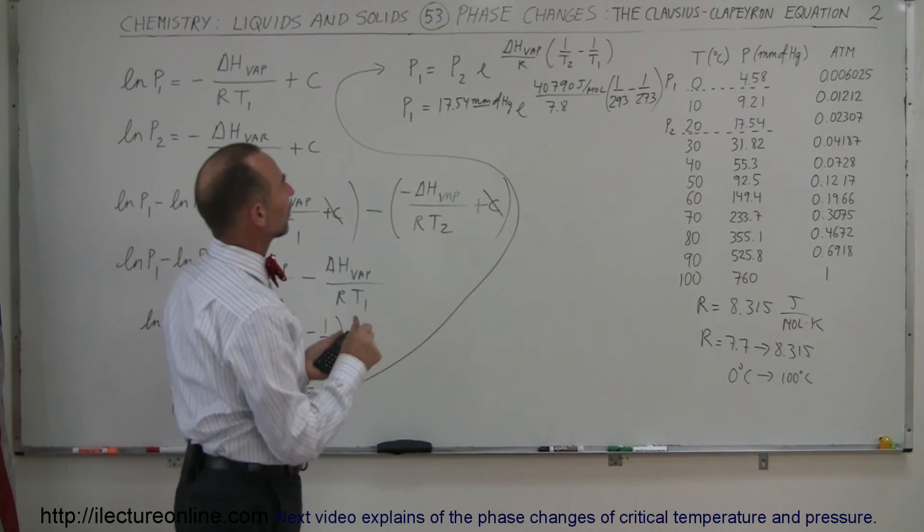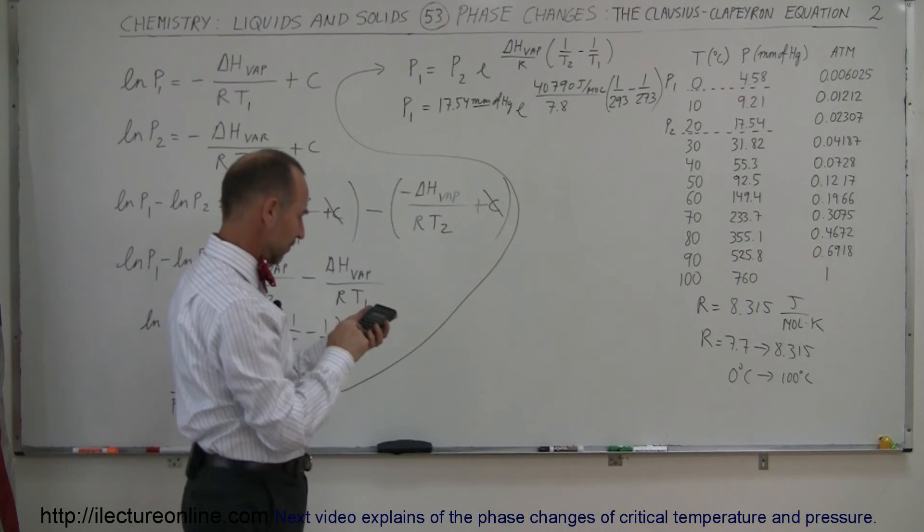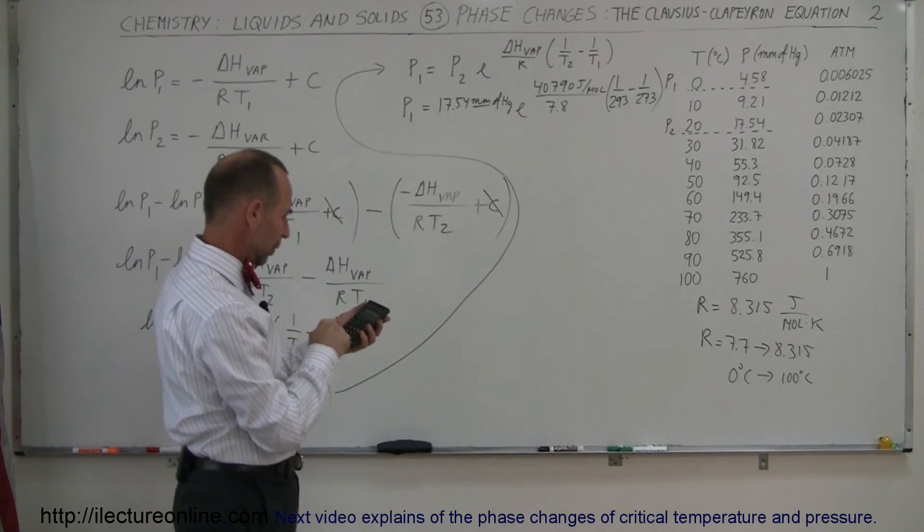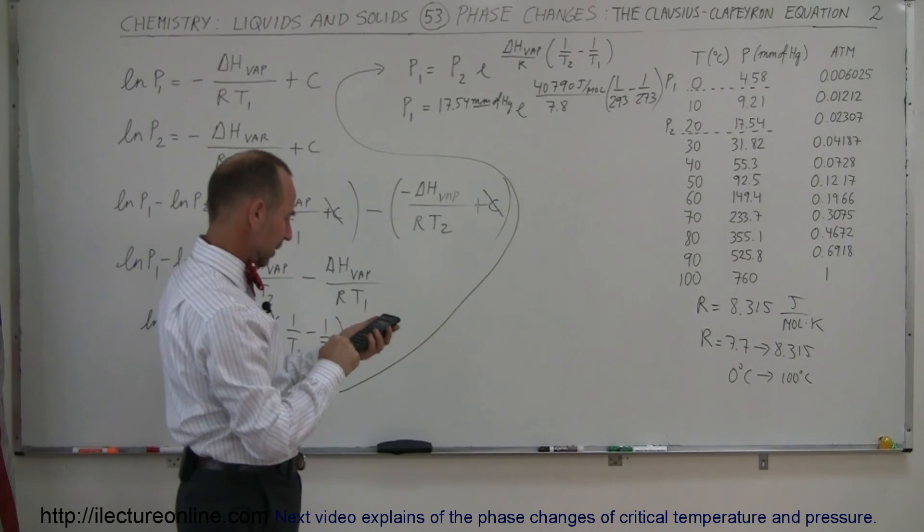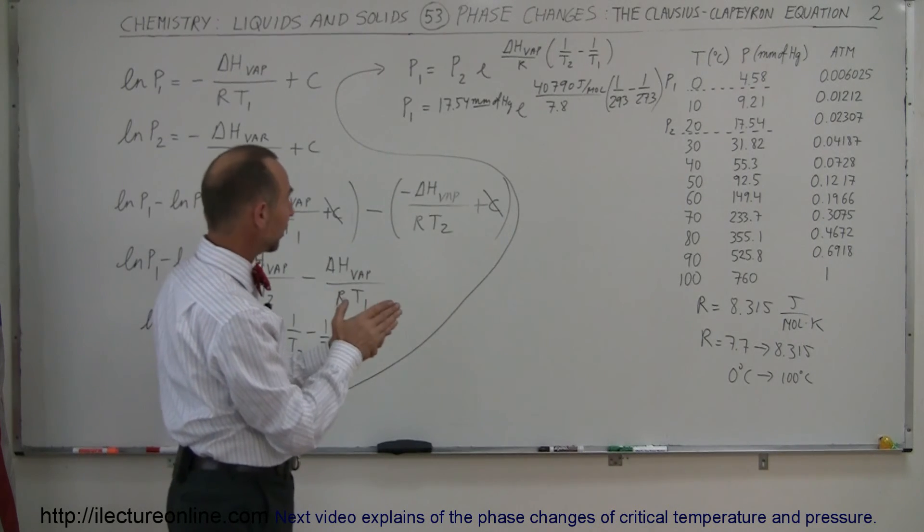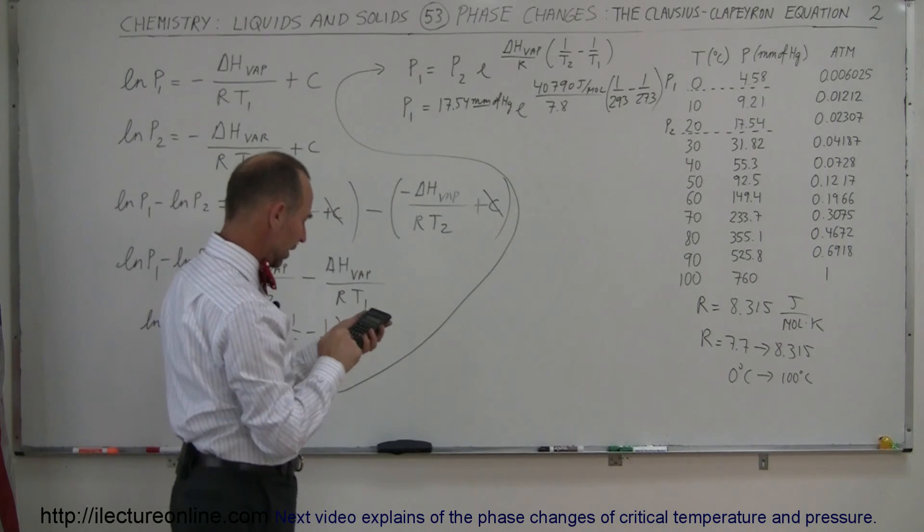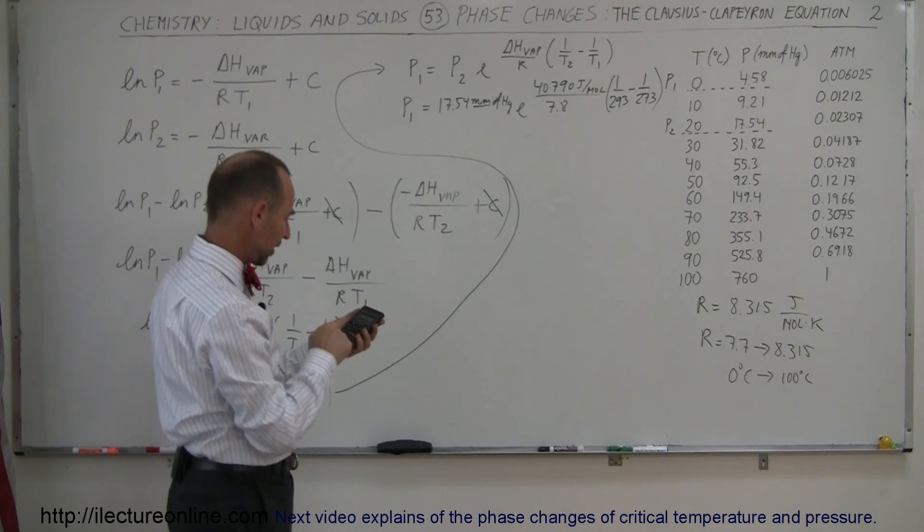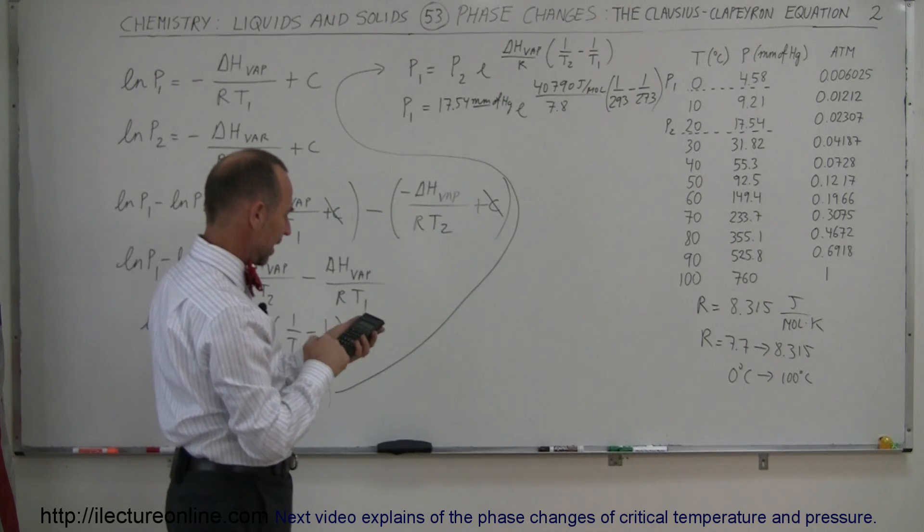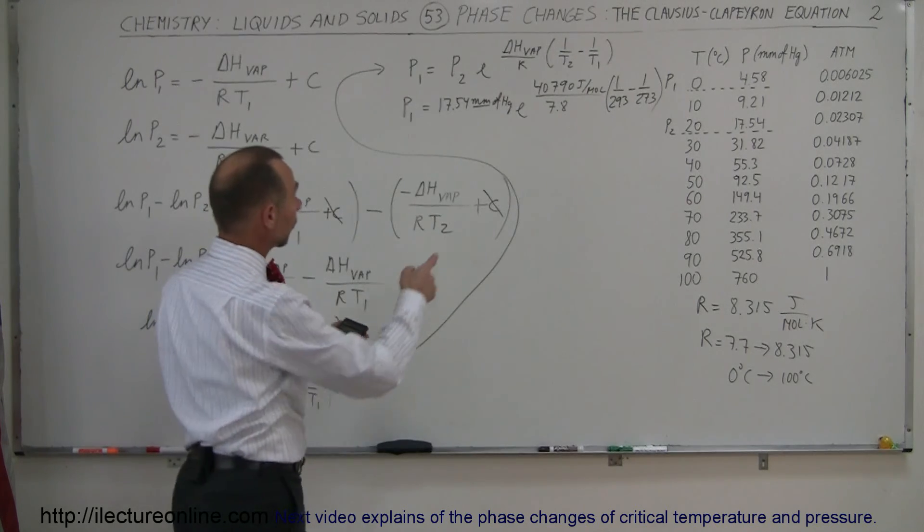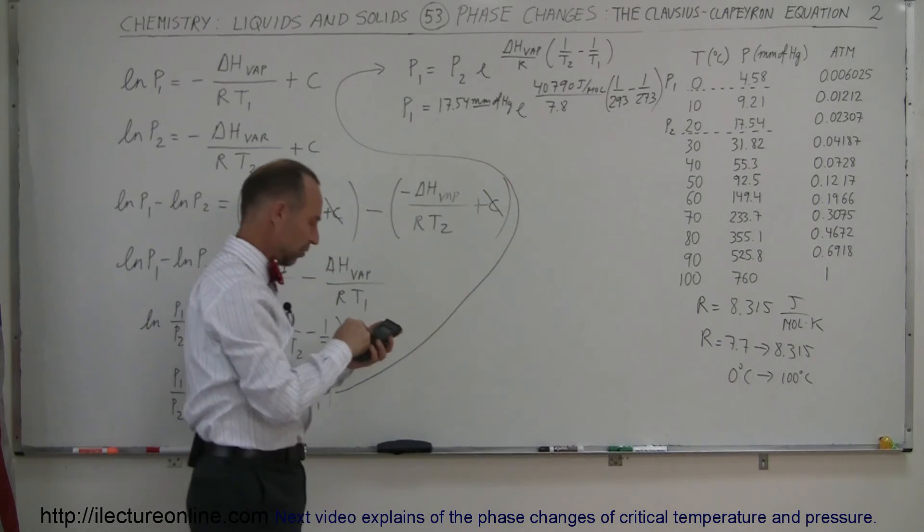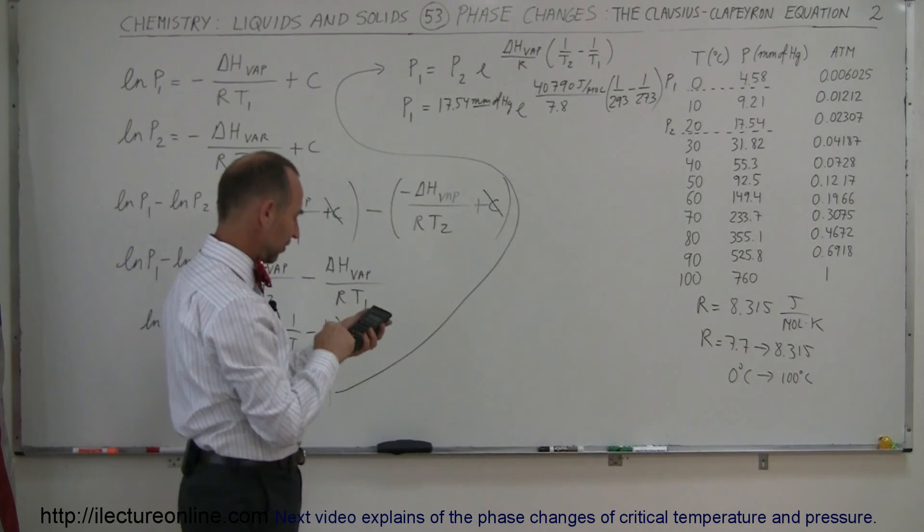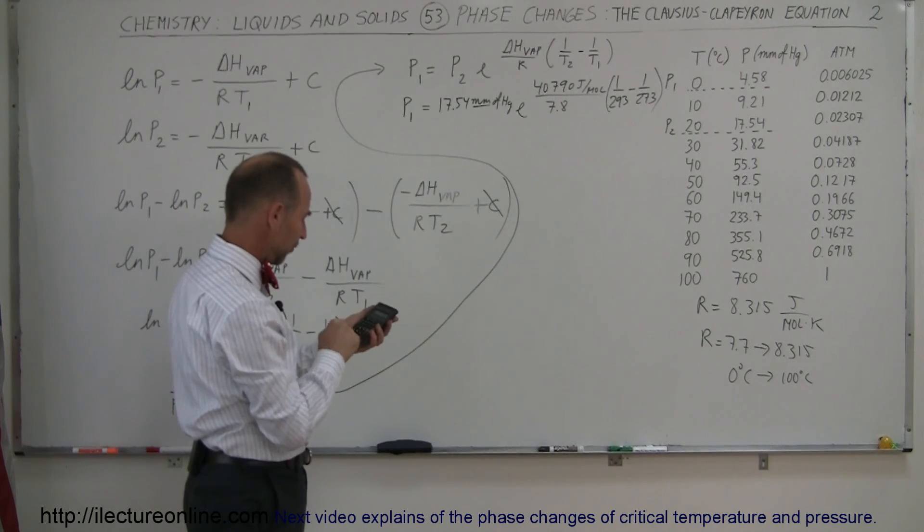Let's try that with our calculator. We want 1 divided by 293 minus 1 divided by 273, multiply that times 40,790, and divide by 7.8. That's the exponent for E, so we use E to the X, and then multiply that number by 17.54.